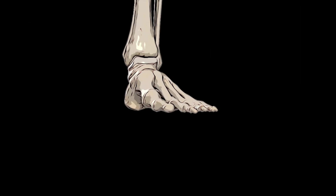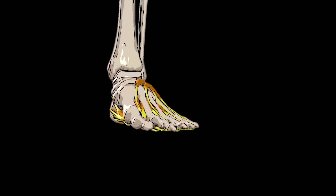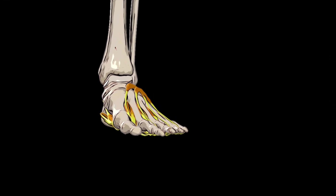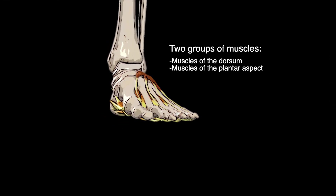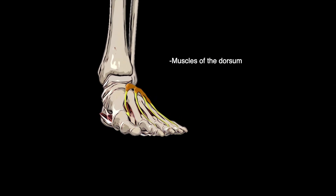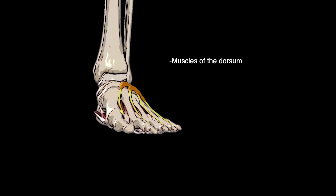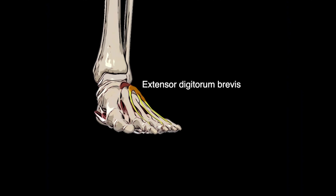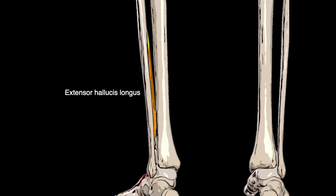We will finish with the muscular structures, of which there are many. The muscles of the foot both originate from and insert into structures within the foot and are involved in fine motor movements. For descriptive purposes they are divided into two distinct groups: the muscles of the dorsum of the foot and the muscles of the plantar part of the foot. The dorsum muscles consist of the extensor digitorum brevis and the extensor hallucis longus. The extensor digitorum brevis is responsible for extension of the metatarsophalangeal and interphalangeal joints of the related digits, while the extensor hallucis longus dorsiflexes the talocrural joint and extends the metatarsophalangeal and interphalangeal joints of the first digit.